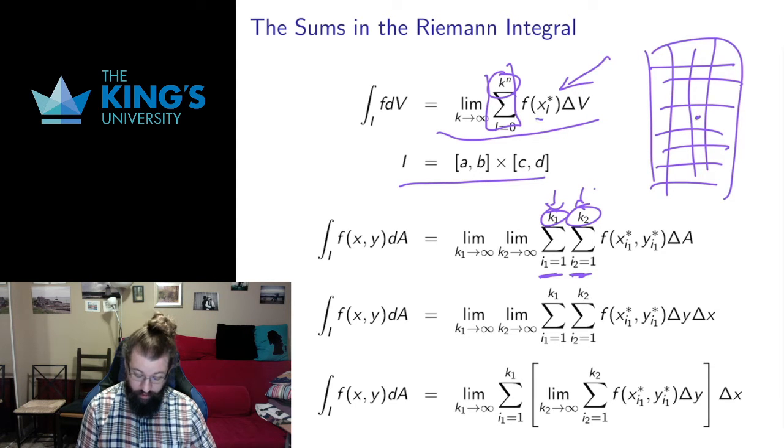And then if I choose a point x_l* in one of these, well I can think of that as an x coordinate that's counting in the x, so it's going to be 1, 2, 3 over in the x. I can think of it as a y coordinate, 1, 2, 3, 4, that's counting up in the y.